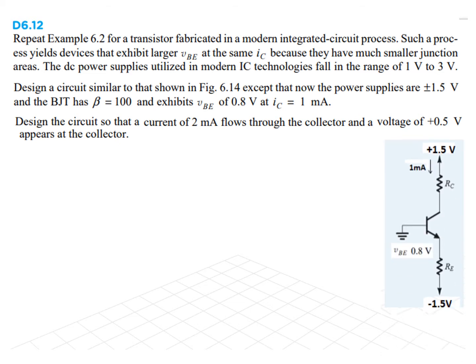So, this is 1.5 volt here, 1.5 volt here and the circuit has a beta of 100 and it exhibits VBE of 0.8 volt at 1 milliampere IC. So, when IC is 1 milliampere, the voltage here VBE is 0.8 volt. So, this is the first part of the circuit. The question is, design the circuit so that a current of 2 milliampere flows through the collector and a voltage of 0.5 volt appears at the collector.